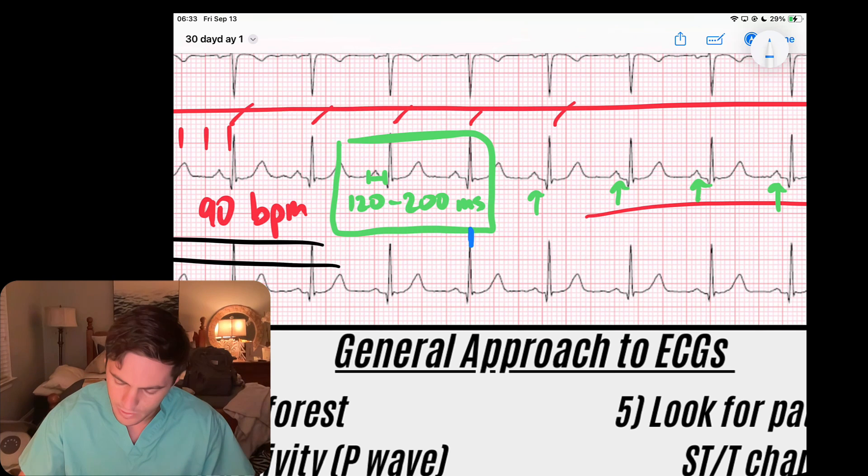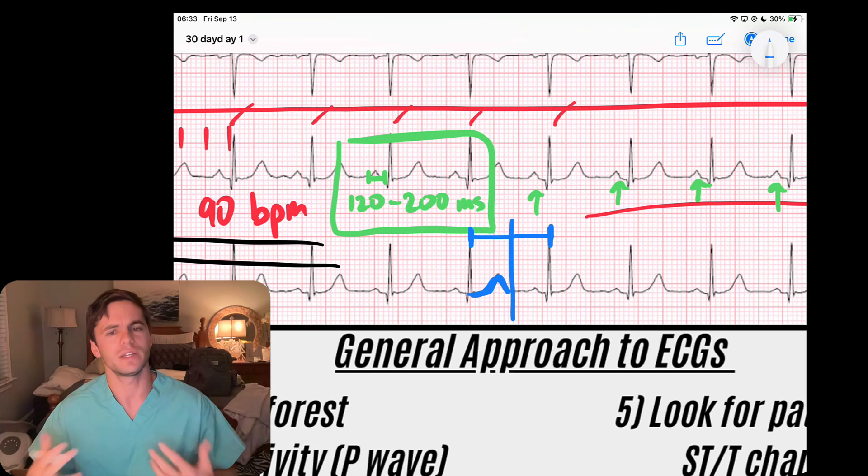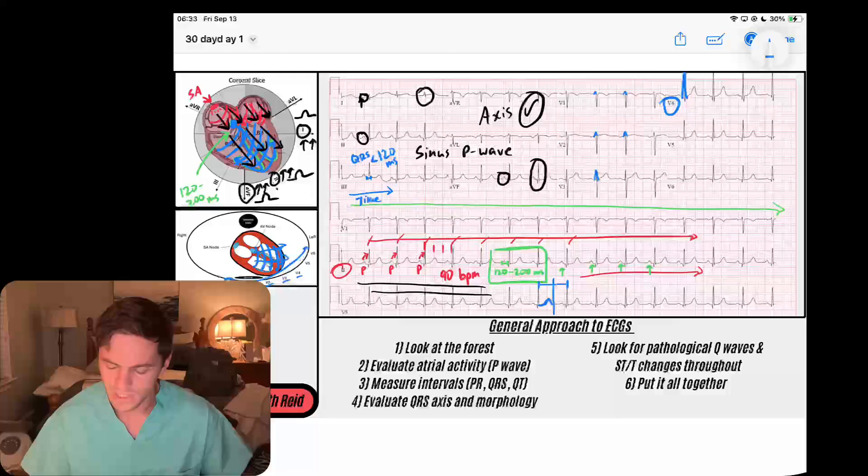I draw a line, mark midway, and I want to make sure that my T waves terminate by the midway point of that RR interval. That tells me that my QT interval is okay for the rate.